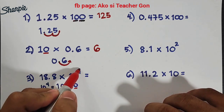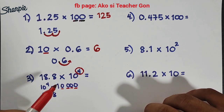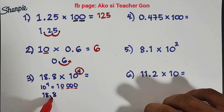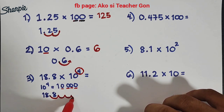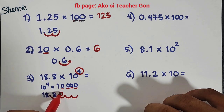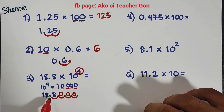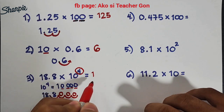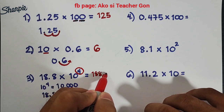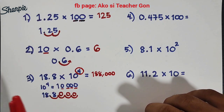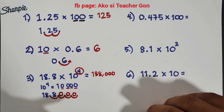You can also observe the exponent directly — we have 4 as our exponent, so we count 1, 2, 3, and 4, and place zeros in the remaining spaces: 1, 2, 3. So we move 4 decimal places from left to right, and the correct answer is 188,000. This is the correct answer for item number 3.